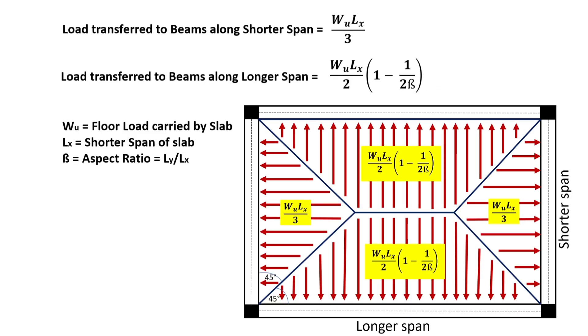The load transferred from the triangular areas to each of the beams along the shorter span is equal to WU Lx upon 3. And the load transferred from the trapezoidal areas of the slab to each of the beams along the longer span is equal to WU Lx upon 2 into 1 minus 1 upon 2 beta. Where WU is the floor load carried by the slab, Lx is the shorter span of the slab and beta is the aspect ratio that is Ly upon Lx.